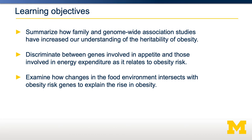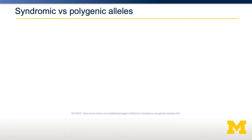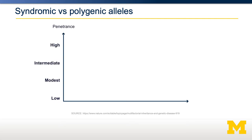First, let's talk about how different alleles can exist in our population. Some alleles are highly penetrant versus not highly penetrant. A highly penetrant allele is very likely to cause the particular condition, so a highly penetrant obesity risk allele means having that allele very likely means you will become obese. A low penetrance allele may have some effect on obesity risk but is not essentially determinative.